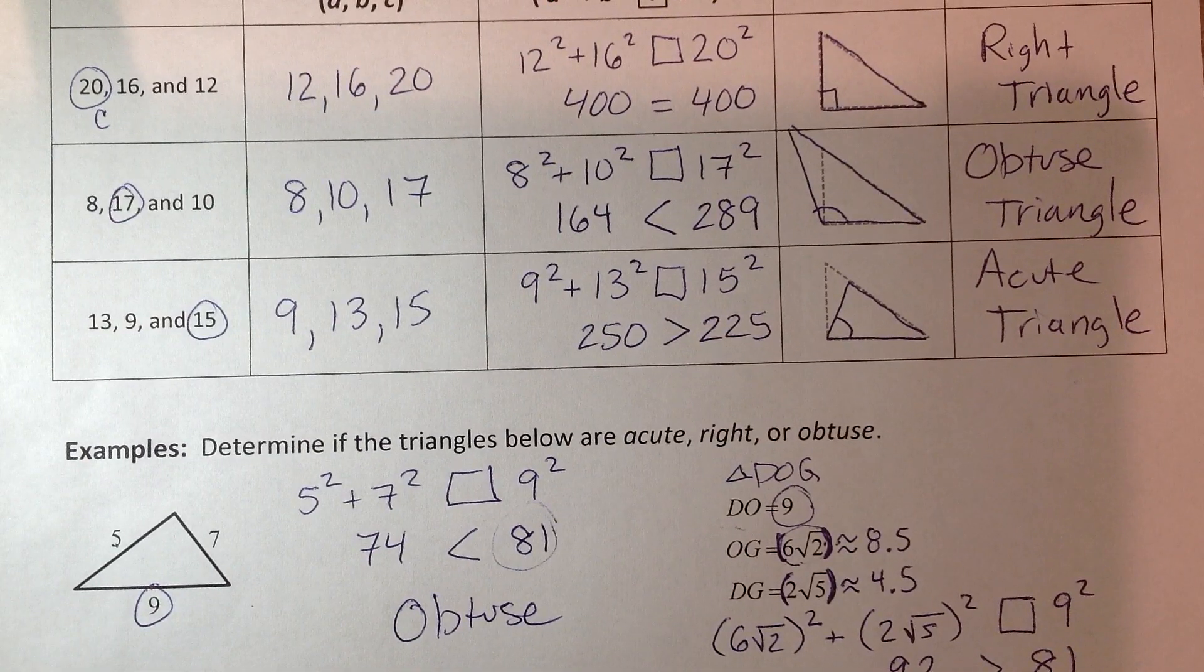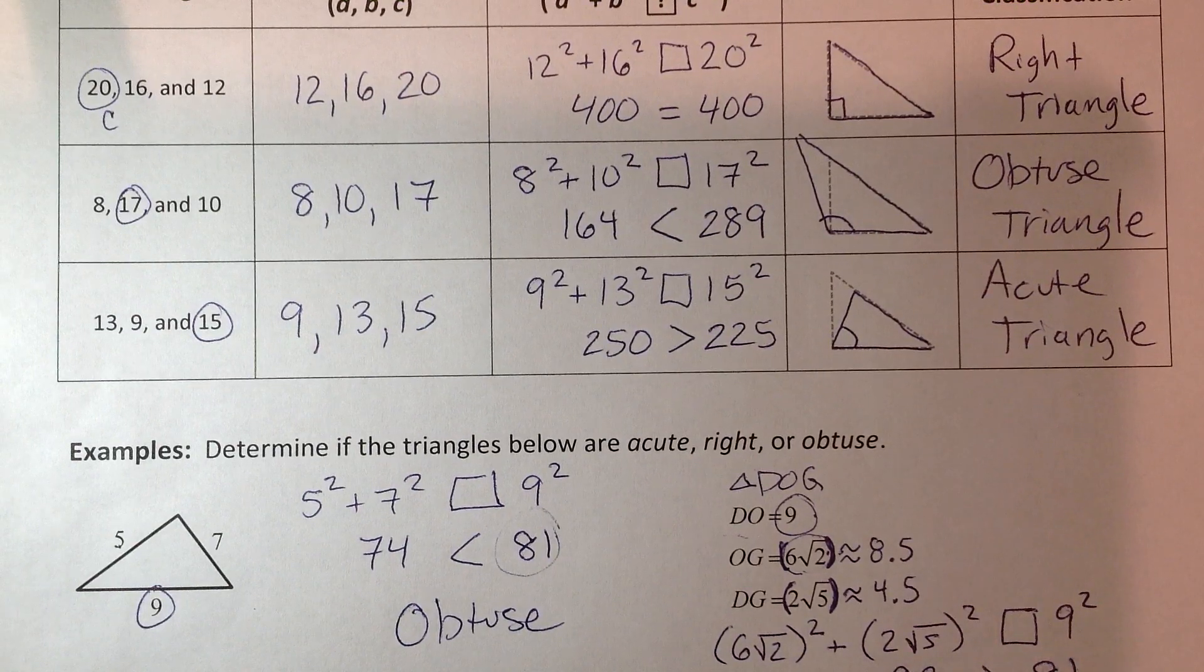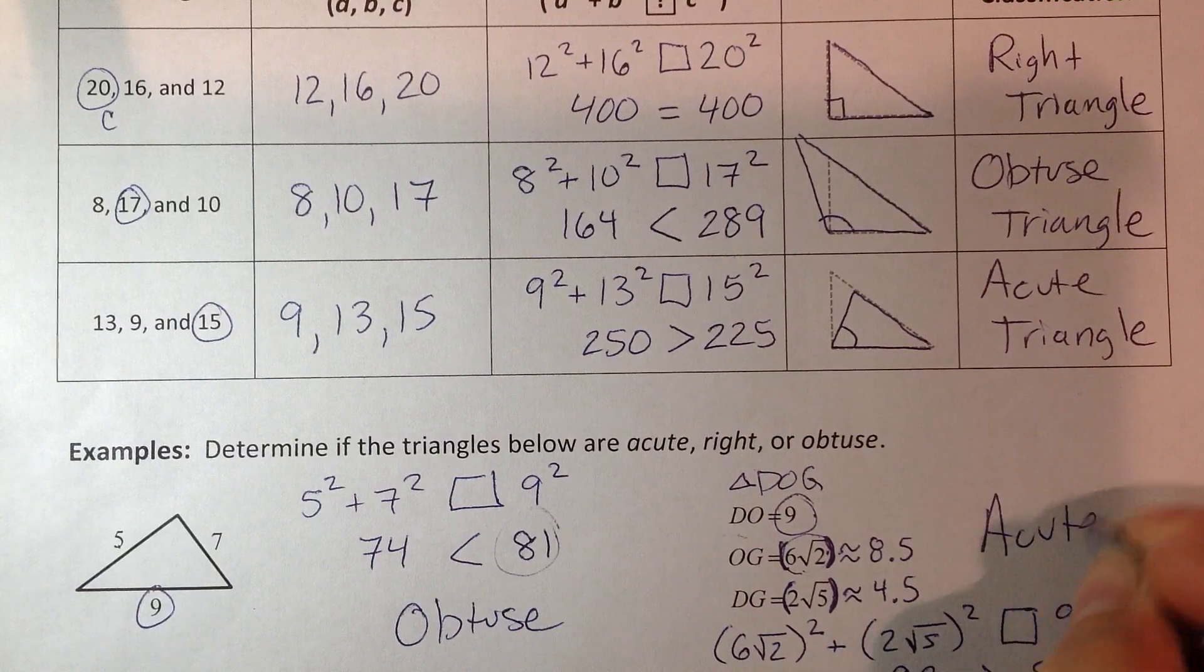So for that hypotenuse in a right triangle to get smaller, it's going to make that opposite angle, the 90 degree angle, smaller. And this is going to be an acute triangle.